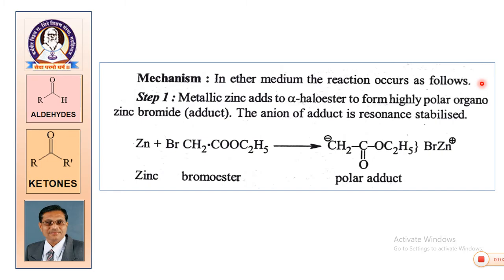In ether medium, the reaction occurs as follows — an inert solvent is preferred. In the first step, metallic zinc adds to the alpha-haloester to form a highly polar organozinc bromide adduct. The anion of the adduct is resonance stabilized: zinc reacts with BrCH₂COOEt to give a CH₂⁻ carbanion stabilized as a polar adduct with zinc bromide.